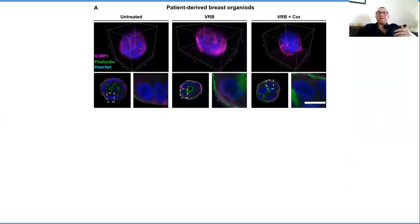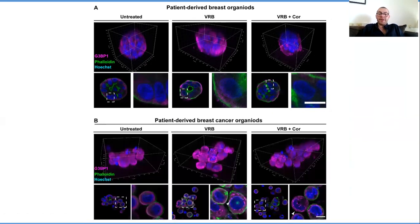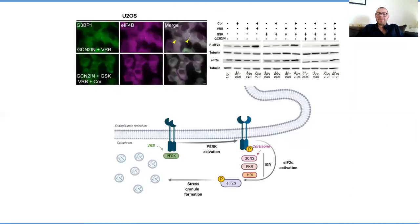We went back to our patient-derived organoid model, and we saw that in healthy tissue, we didn't see any stress granules, both in the VRB or the VRB and cortisone treatment. But when we treated our cancer organoids with the same treatments, we saw the stress granules begin to form. More importantly, we saw cell death in the VRB and cortisone treatment.